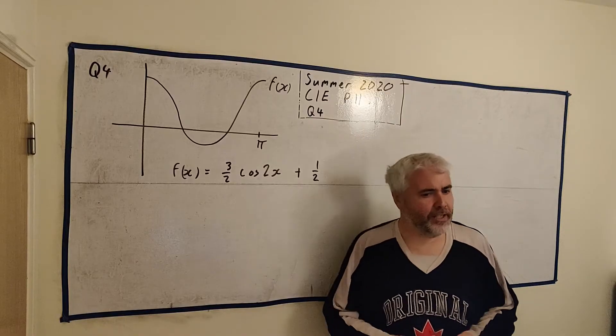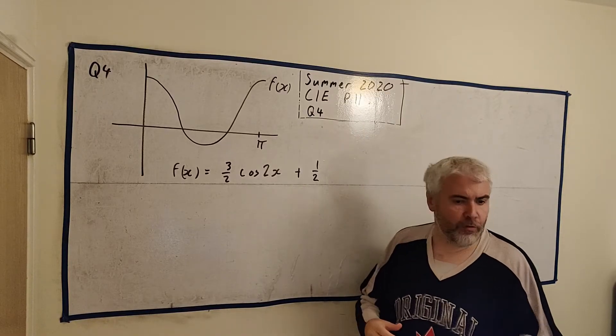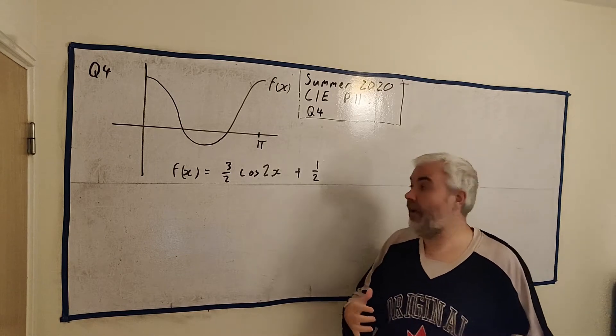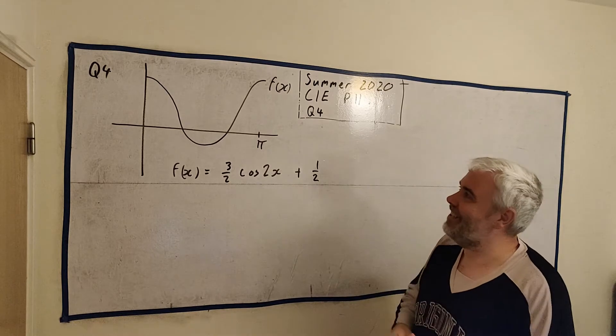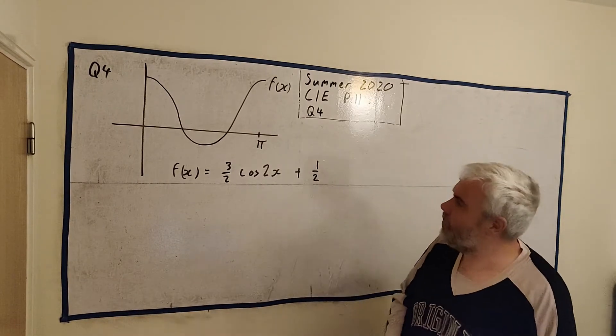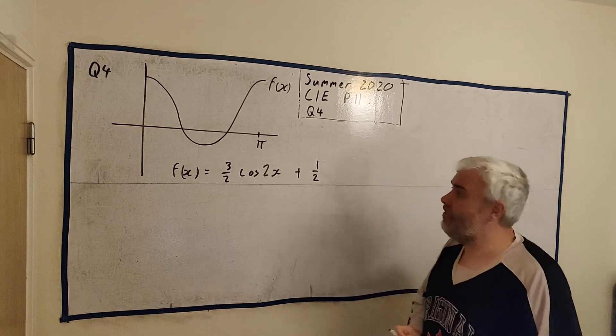This question is split into three parts, A, B and C, but it revolves mostly around our understanding of a trigonometric function like this. And here's the graph they've given us, and I've tried to draw it out accurately. I think that's everything there.